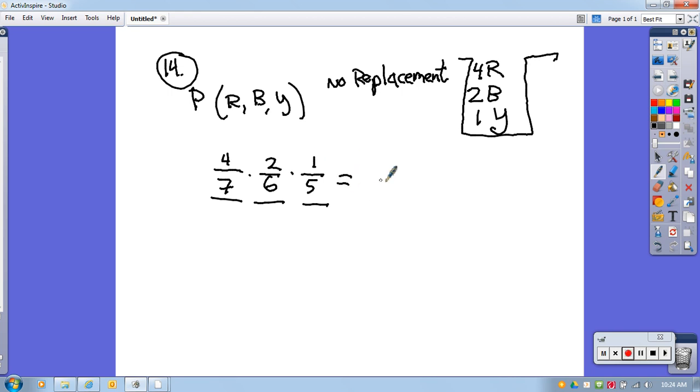So if I multiply this all out and then reduce it, I'm going to end up with 4 over 105.